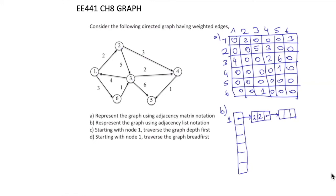Consider the graph — there are two edges going out of node 1: one going to node 2. In the linked list, we have the node value and the weight value, then we have a link. From node 1, we have a connection to node 2 whose weight is 2, and also a connection to node 6 with weight 3. We have only 2 connections, so this is the end of the linked list.